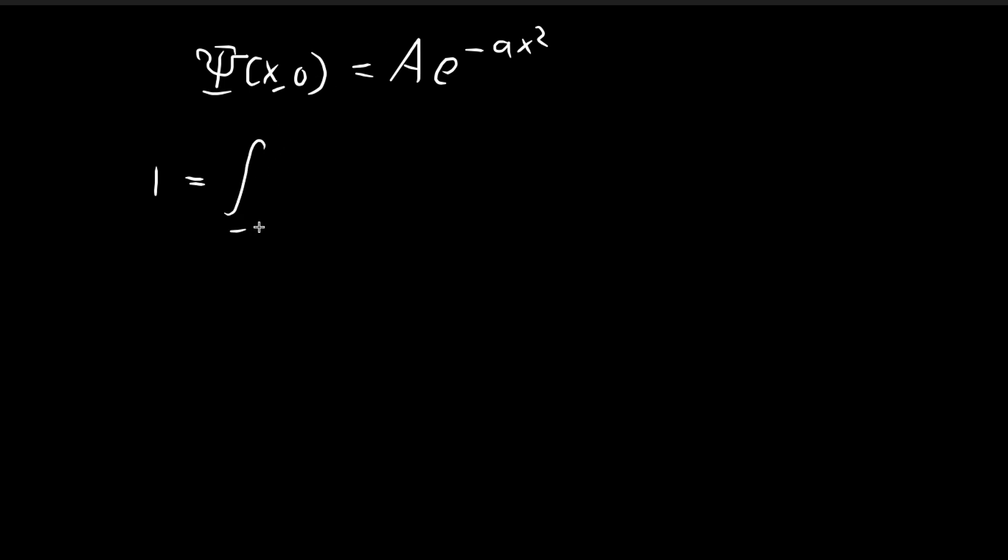To normalize this, we need to consider this integral over here be equal to 1. That is what it means to normalize a wave function. The absolute value of the initial wave function squared, that's just equal to the absolute value squared of the constant.